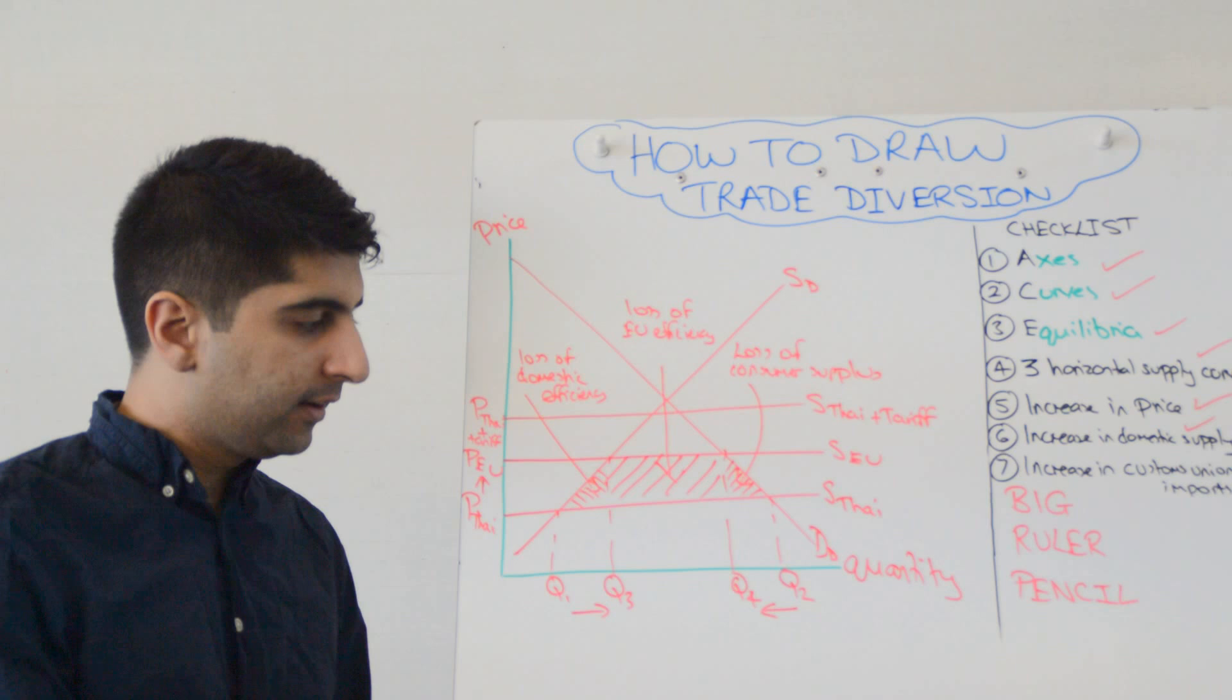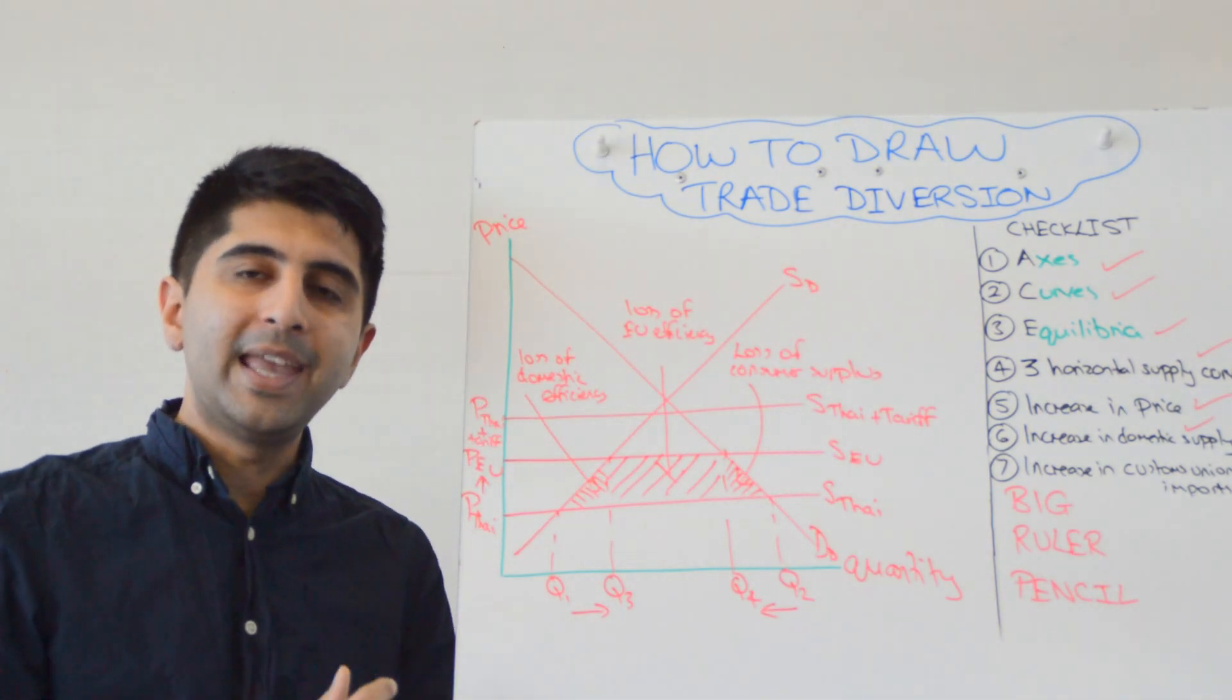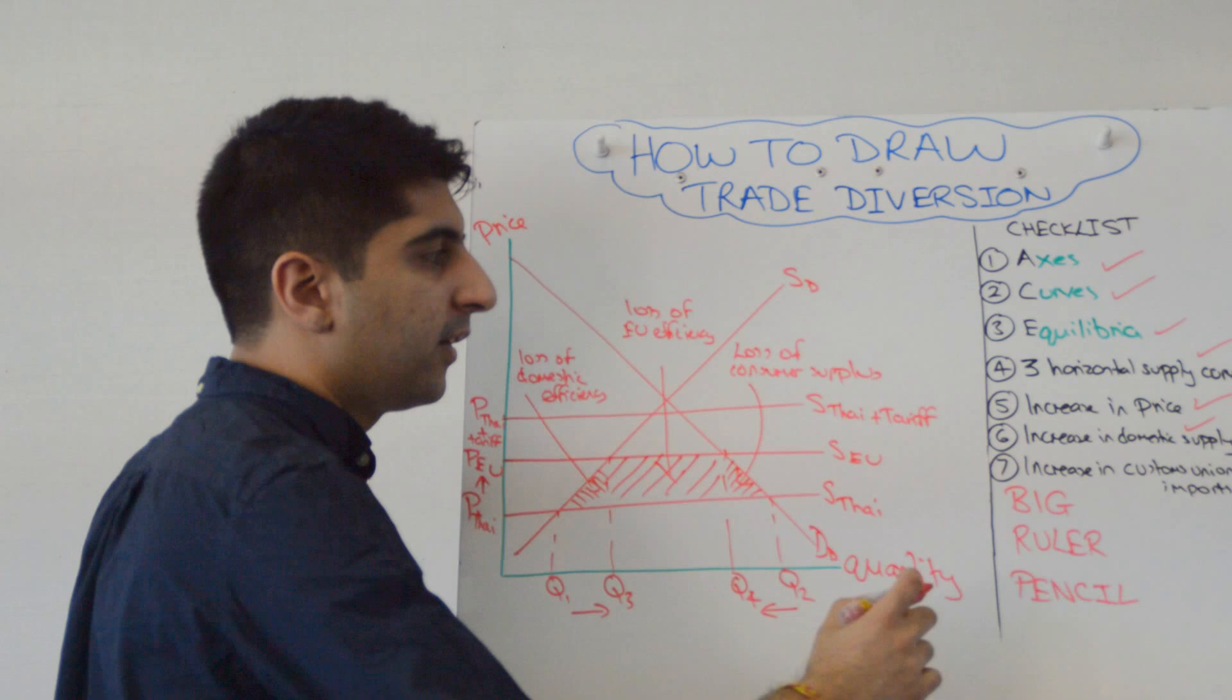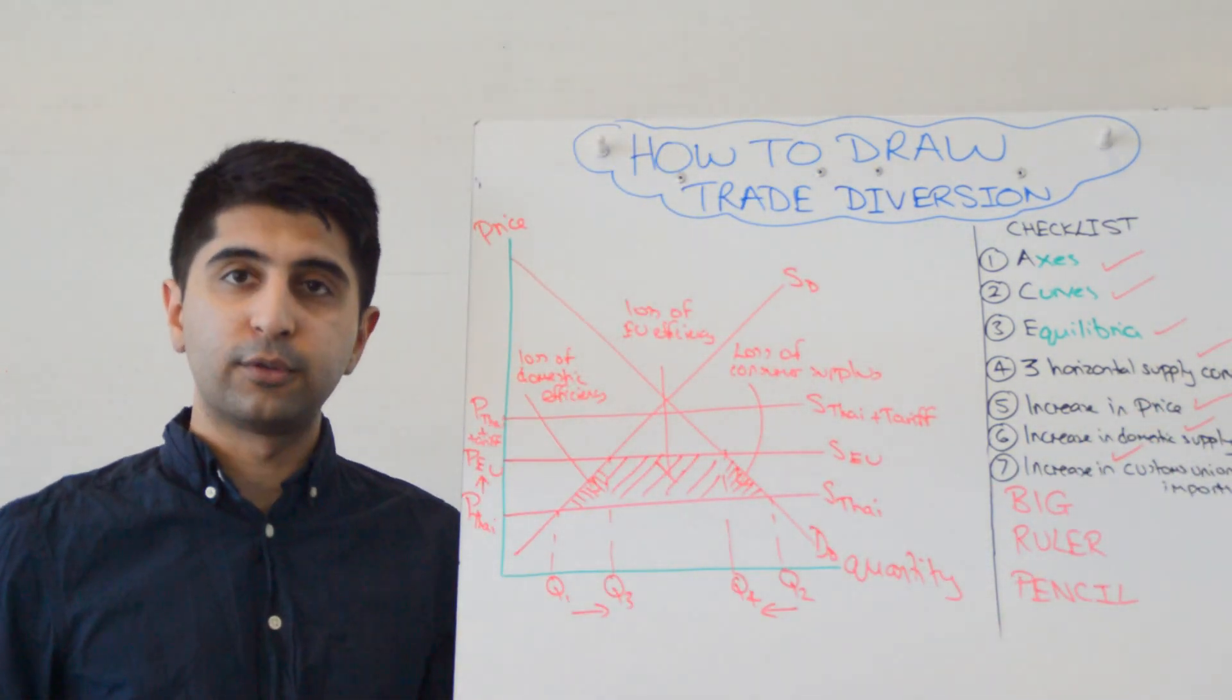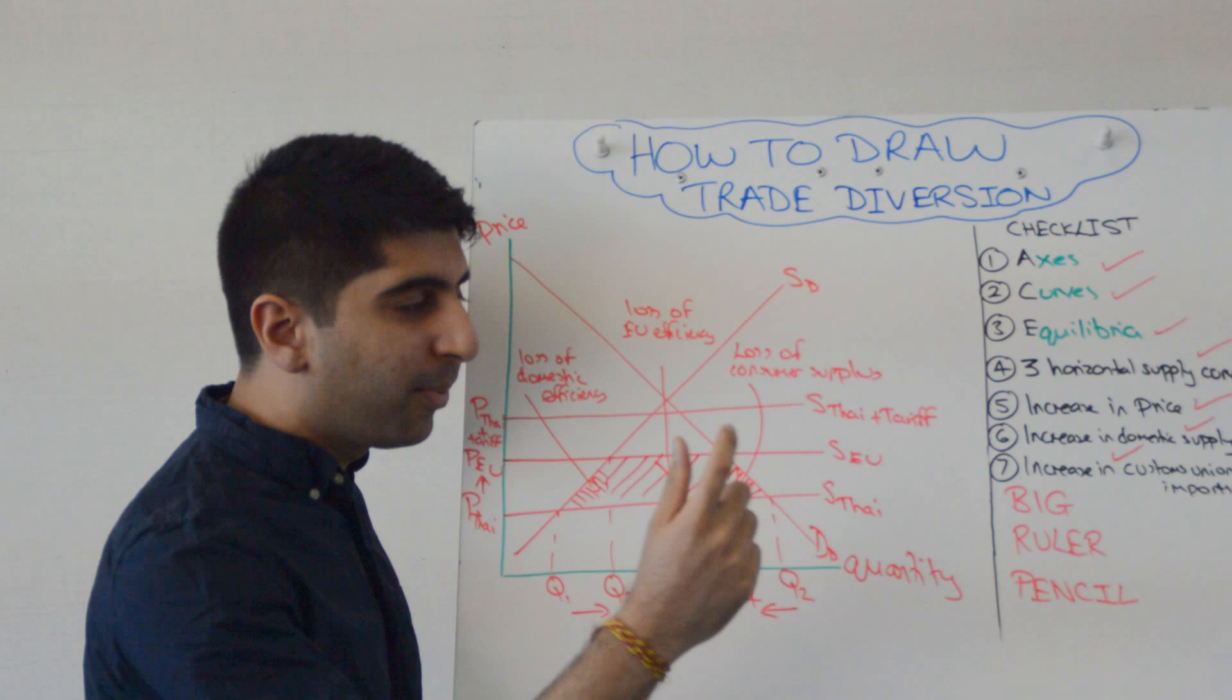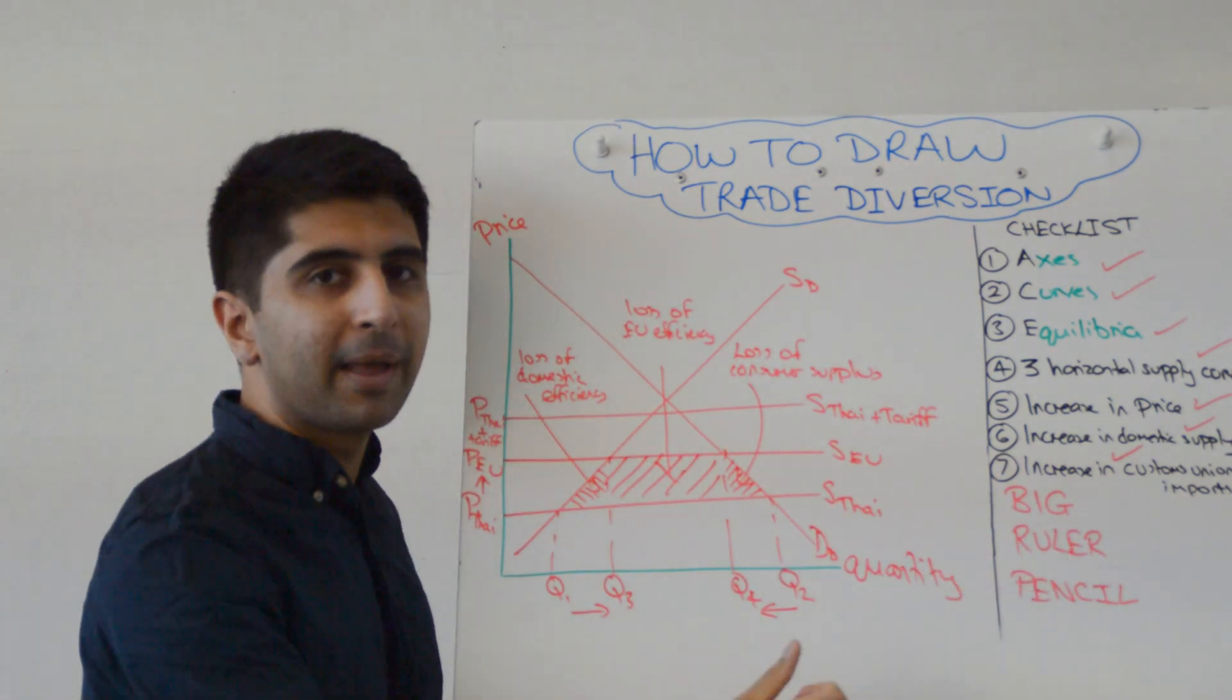Q1, Q2 imports were from Thailand. Suddenly now, Q3, Q4 imports are coming in from inefficient EU producers. We've made that very clear. That is the trade diversion. Thailand completely losing out as a result of this.